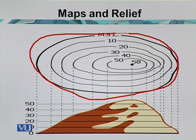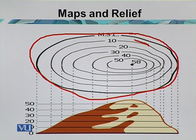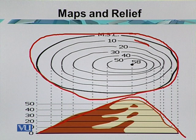Contours join places of the same height and every contour starts from mean sea level. Each successive circle is higher than the previous one — for example, 10 feet, then 20, 30, 40, 50, and 58 feet as the highest point of the area. This gives a true representation of a mound or landform, and every contour has a surveyed point, making it a true representation of relief.